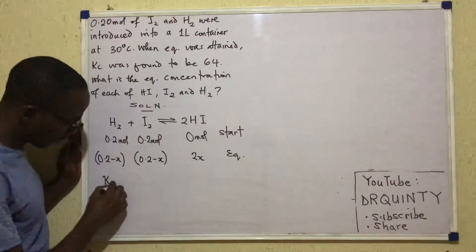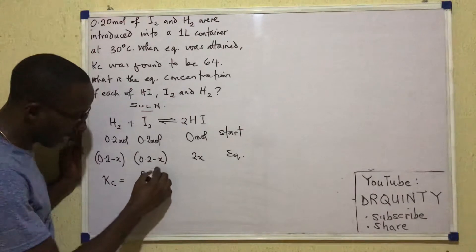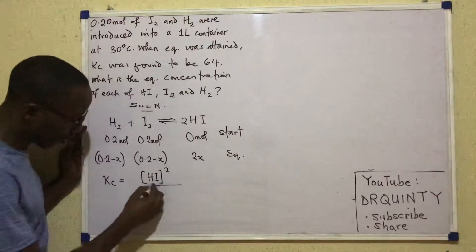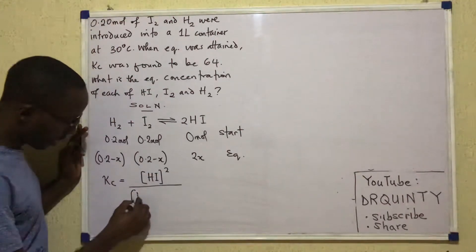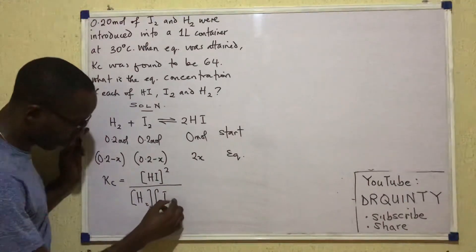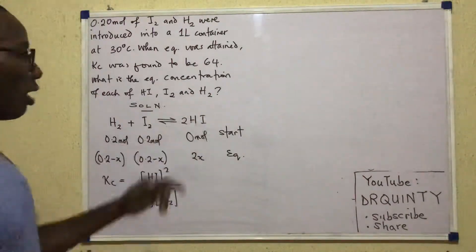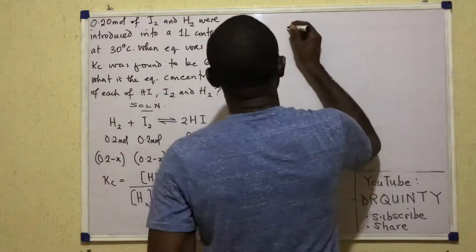Now, how do we write the Kc expression of this reaction? The Kc will be HI squared over H2 into I2 concentrations. So I'm going to bring the equilibrium concentrations up here.